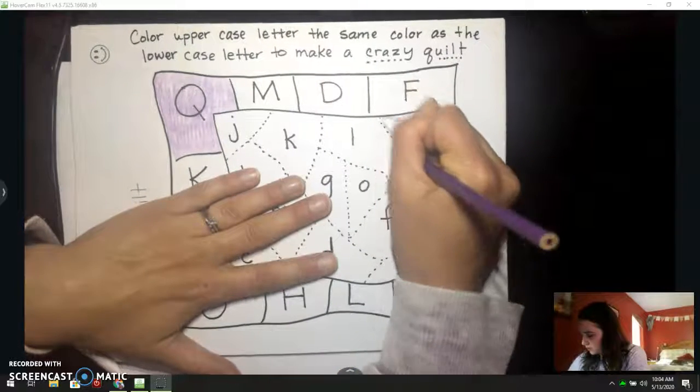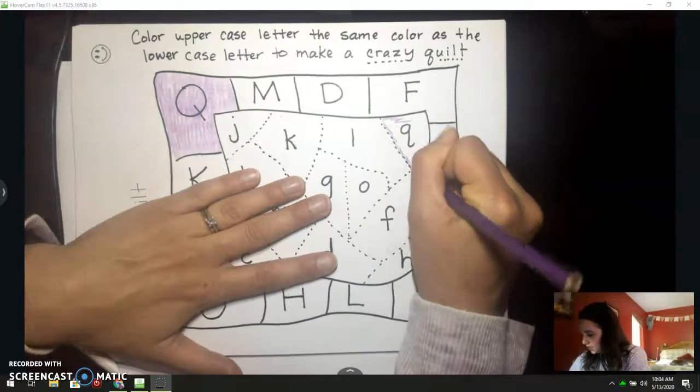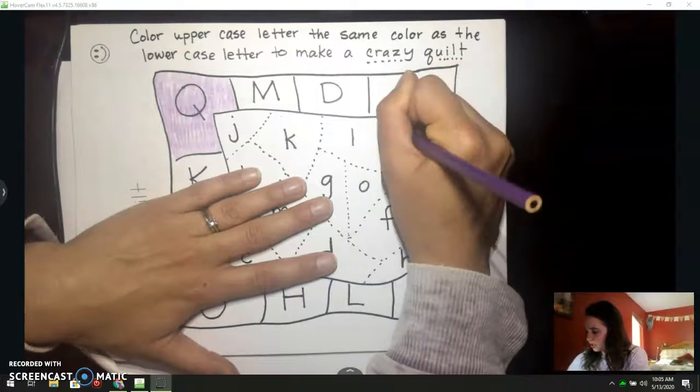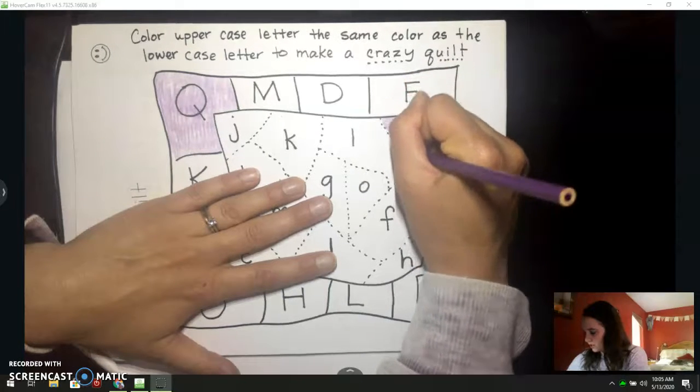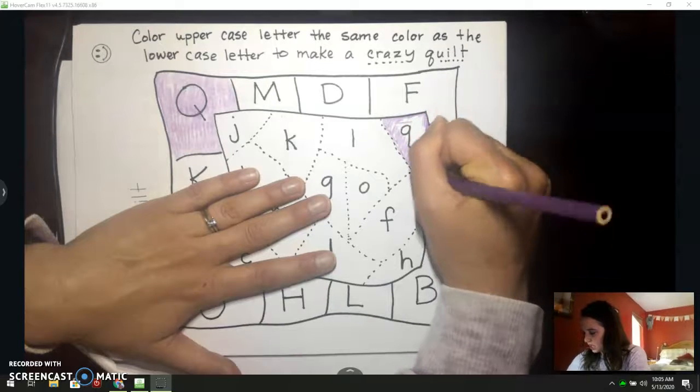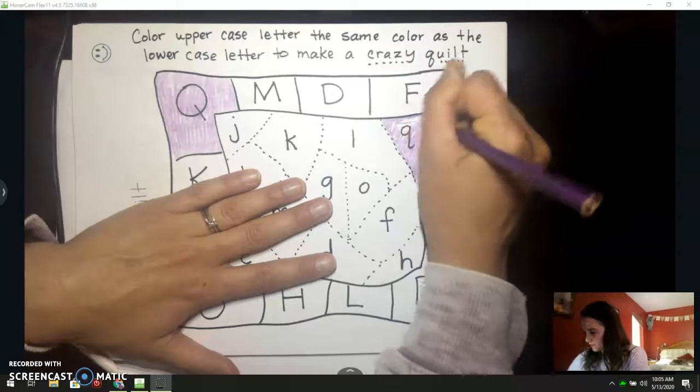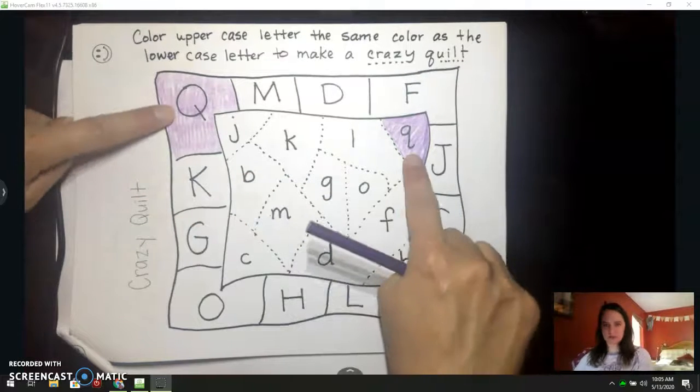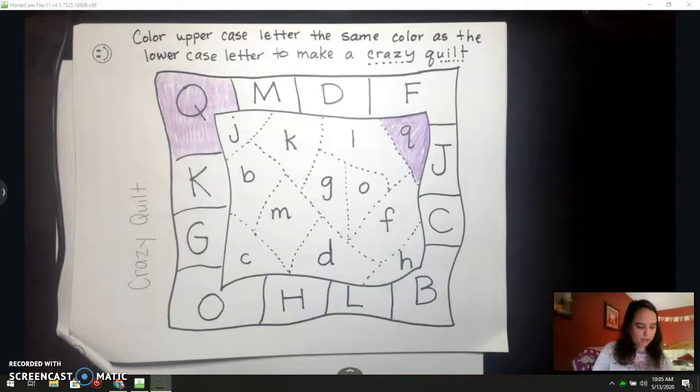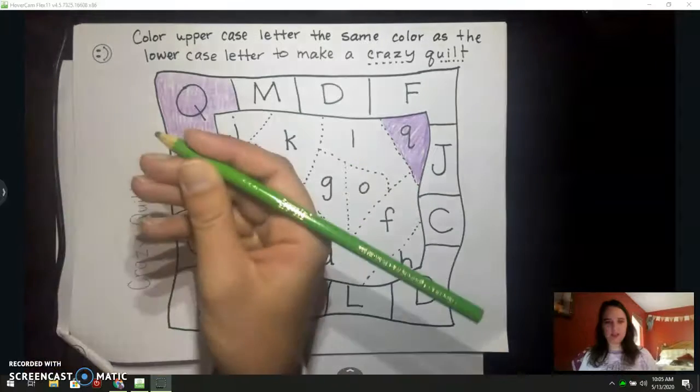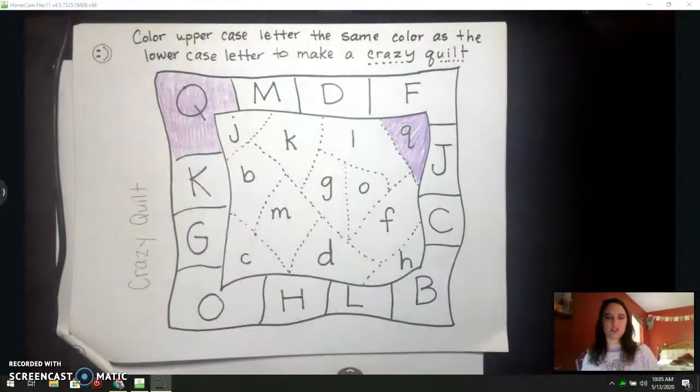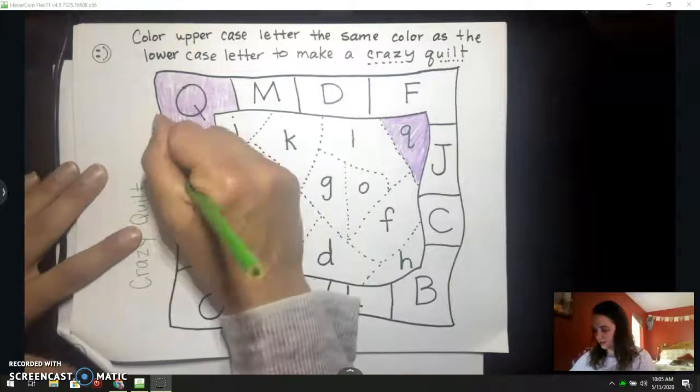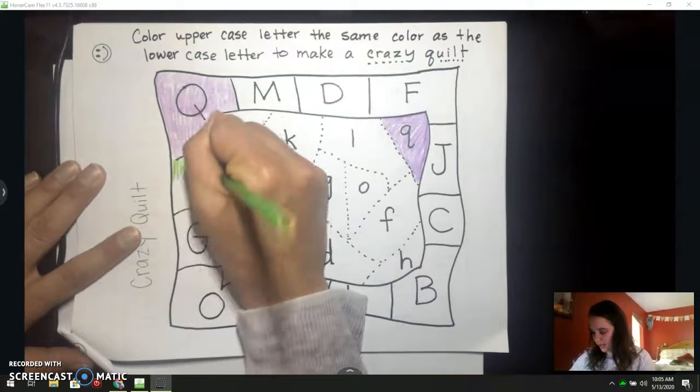So, I'm going to color my Q piece the same color. Have you ever seen a quilt? It's where they take a bunch of different kinds of fabric and they sew it together. So, now these Qs match. Your job now is to find another color. I have yellow-green here. You can choose a different color. And to color another uppercase letter, I'm going to just go down the line and do my uppercase K.